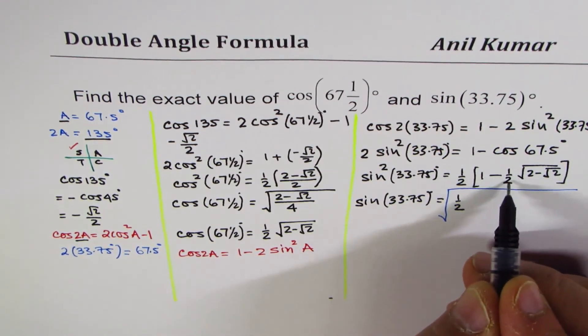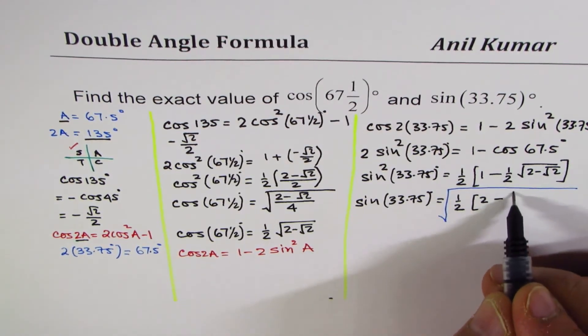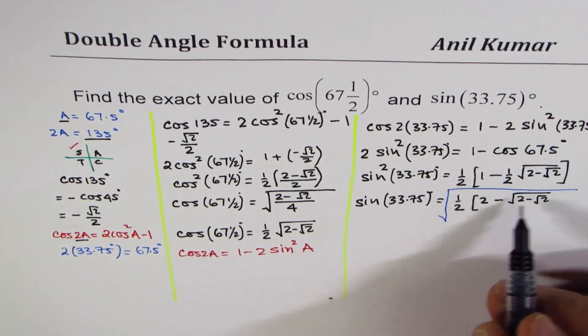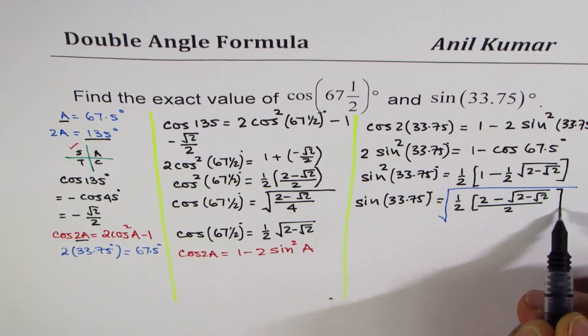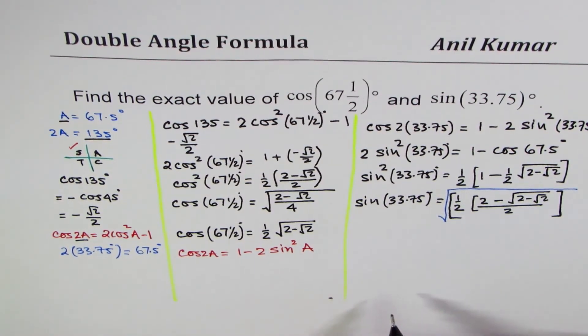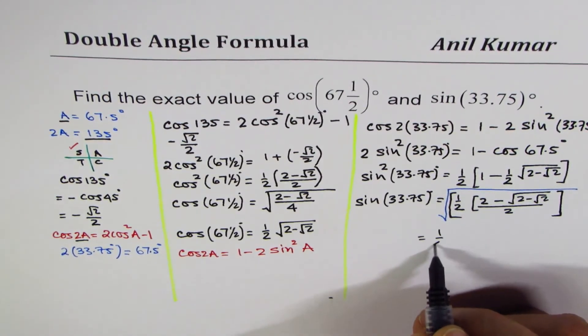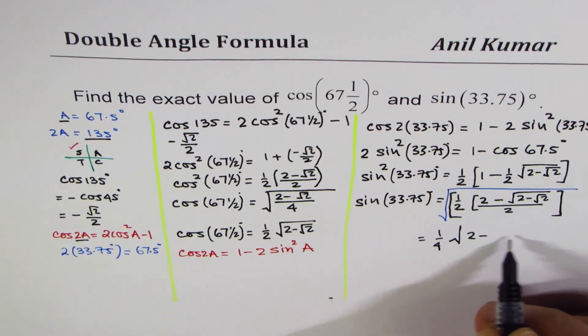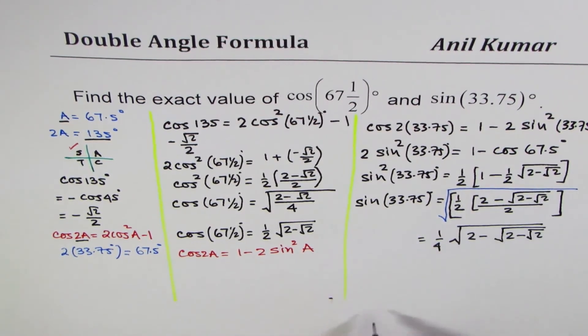Now let me rewrite the inside term. I want to take this 2 as a common denominator. So I will multiply this by 2 minus, we have square root of 2 minus square root 2, and then this 2. All this comes within the square root. So I could write this 2 times 2 as 4, bring it outside as 1 over 4. And within square root, we are left with 2 minus, square root of 2 minus square root 2. That is sine 33.75 degrees.